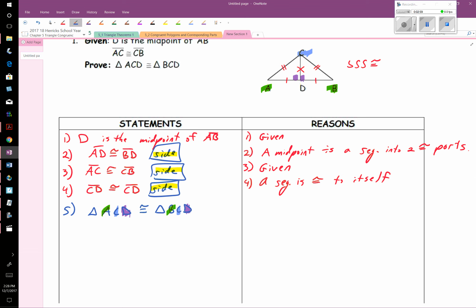Okay, yeah, this works. So these triangles are congruent by side, side, side congruence. And we're done with the proof.